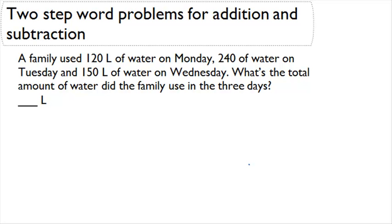Here the question says, a family used 120 liters of water on Monday, 240 liters of water on Tuesday, and 150 liters of water on Wednesday. What's the total amount of water that the family used in the three days?